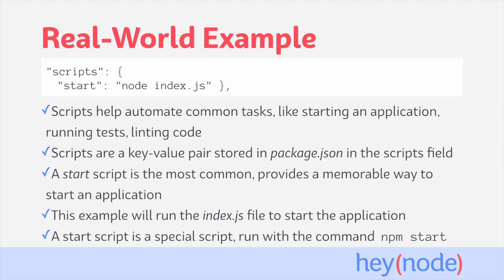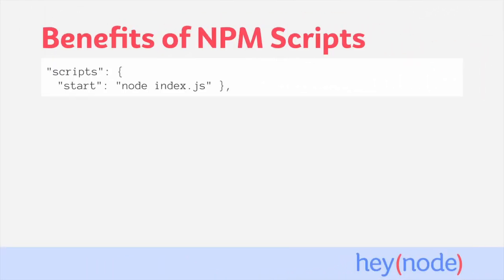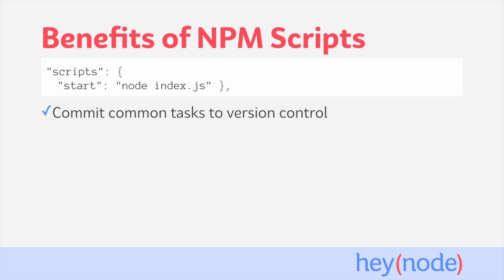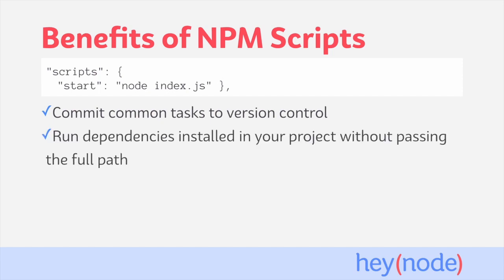Most other scripts need to be run with npm run and then the name of the script. Using scripts in your project can be very useful for a number of reasons. One of the benefits of using scripts is that commands associated with your application can be committed to version control. This not only keeps them written down somewhere so you won't forget them, but makes it easy for anyone else working with the project to use the exact same commands without them needing to be aware of the commands directly. Scripts also make it much easier to run dependencies which are locally installed in your project, because you don't have to pass the full path when running packages from scripts.